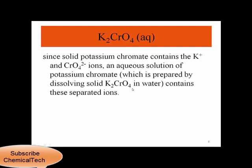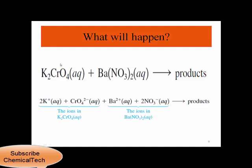We have the same thing for potassium chromate. Since solid potassium chromate contains potassium and chromate ions, an aqueous solution of potassium chromate — prepared by dissolving solid potassium chromate in water — contains these separated ions. So we have two reactants, each dissociated into different ions, giving us two cations and two anions as reactants. We don't know anything about the products yet, but we know both aqueous solutions dissociate into different ions.